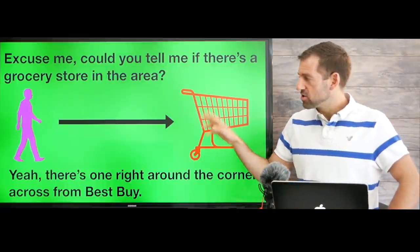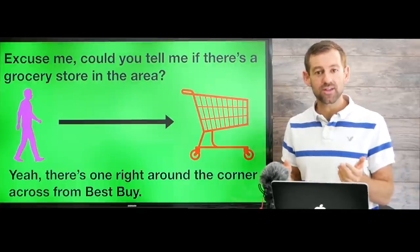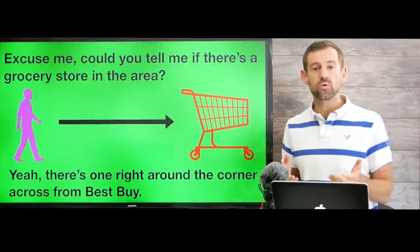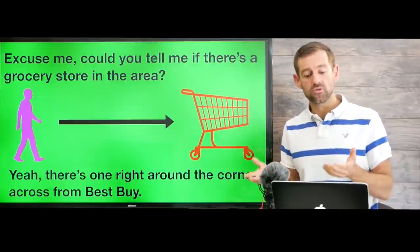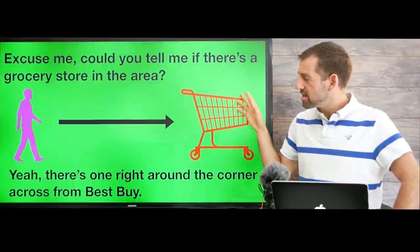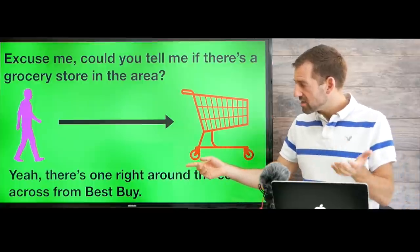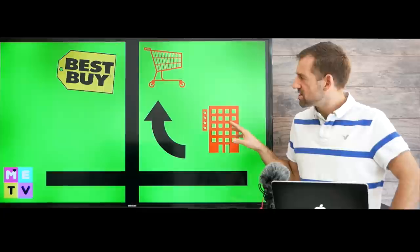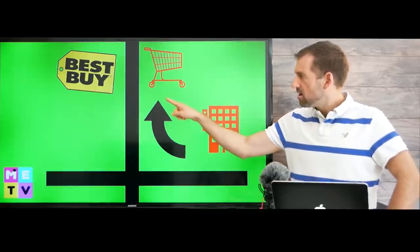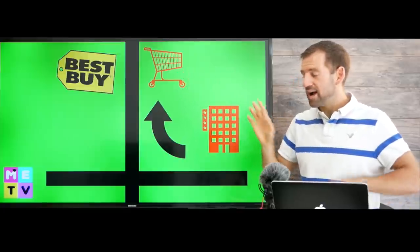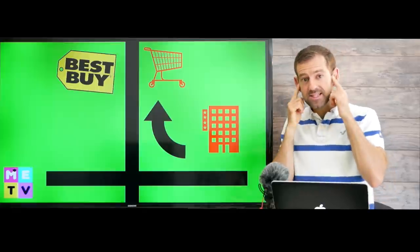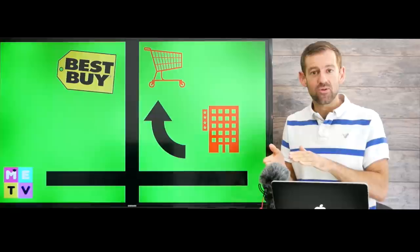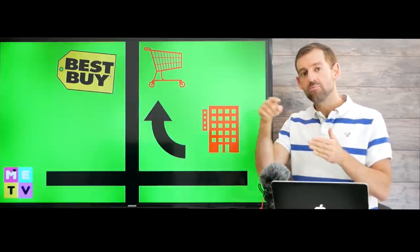Let's look at another example. Say you're getting hungry and want to go to a grocery store — a supermarket. In Canada and the US we usually use the term "grocery store." So you ask: "Excuse me, could you tell me if there's a grocery store in the area?" The person might answer: "Yeah, there's one right around the corner, across from Best Buy." When asking for directions, listen for key phrases like "around the corner," "around the block," and "across from" a landmark.